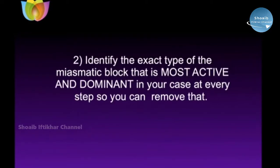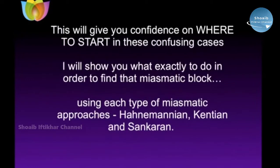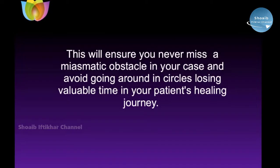Second, you'll identify the exact type of block that is most active and dominant in your case at every step, so you can remove it. This gives you confidence on where to start in these confusing cases — where you have a whole meshwork of symptoms at different layers all coming together. I'll show you exactly what to do to find that block using each of the three miasmatic approaches: the Hahnemannian, the Kentian, and the Sankaran. This ensures you'll never miss a miasmatic obstacle and avoid going around in circles, losing valuable time.